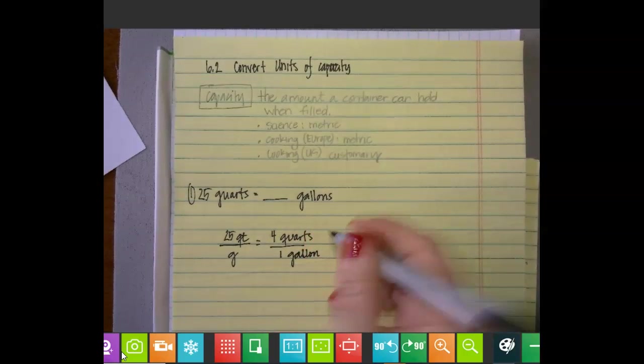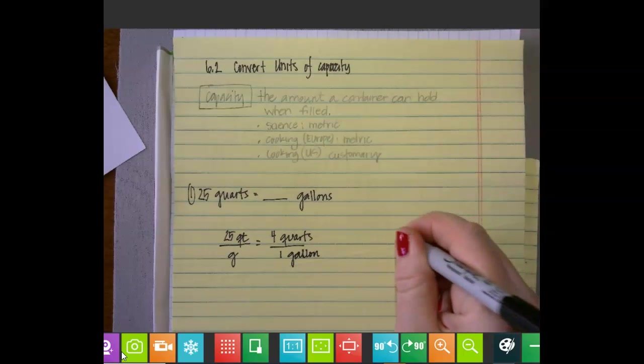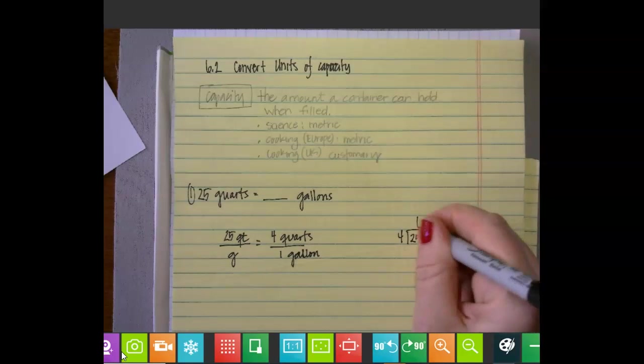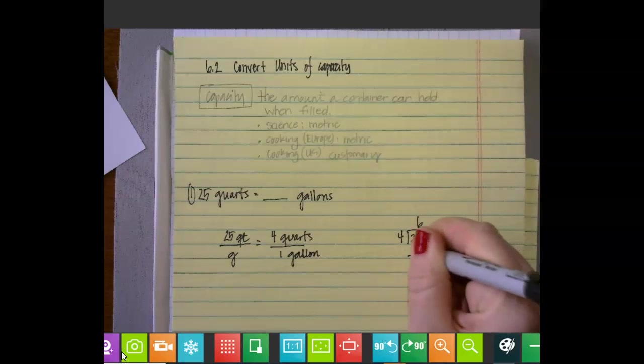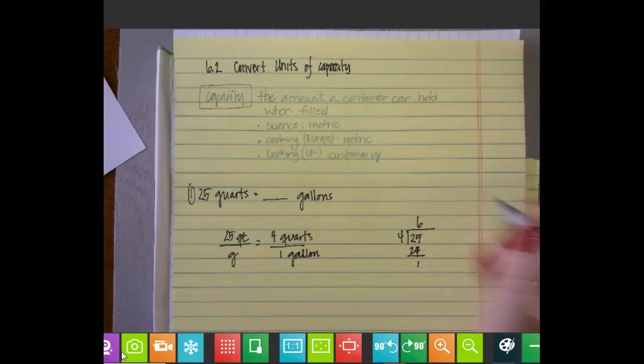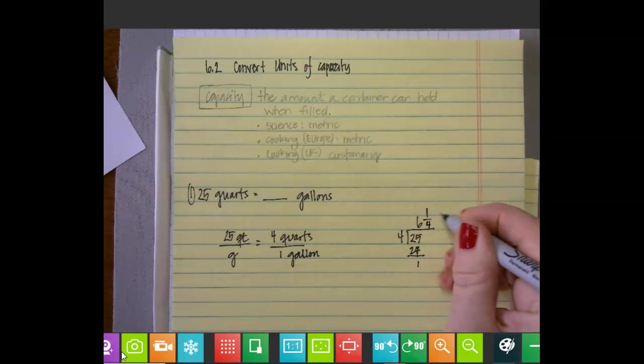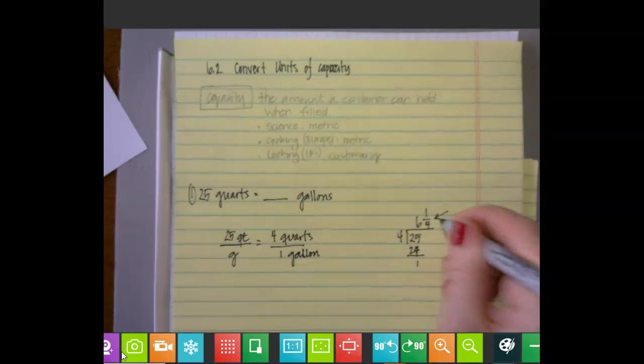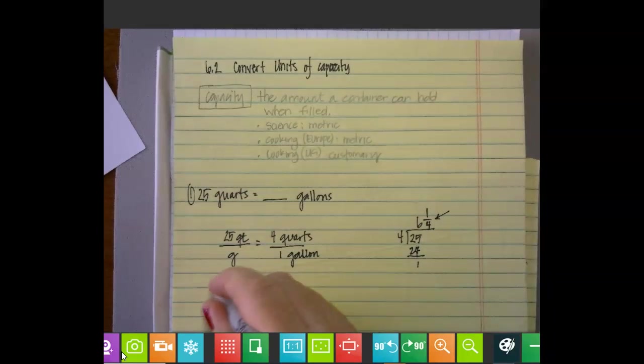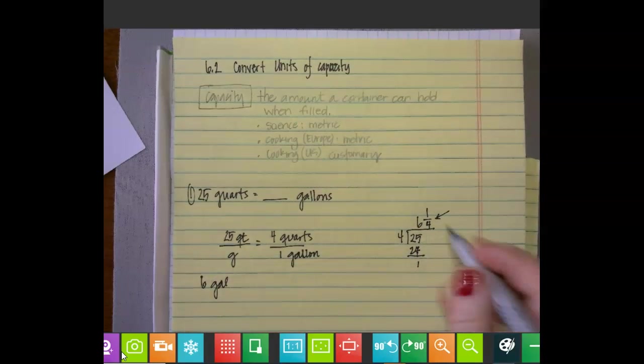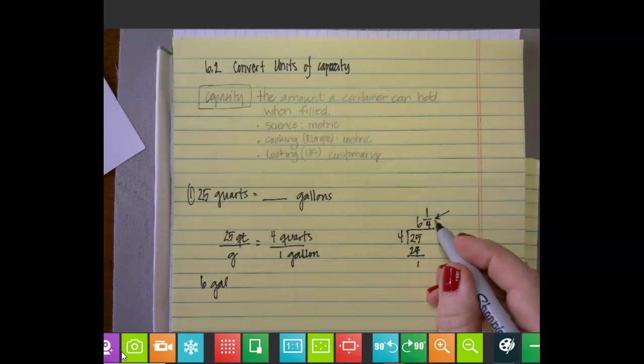Using ratio reasoning, we divide 25 by 4, so we get six gallons and one fourth. We want to make sense of this: 25 quarts is the same as six gallons, and then a quarter of a gallon is one quart. If you wrote the answer as six and one quarter gallons, that would be correct as well.